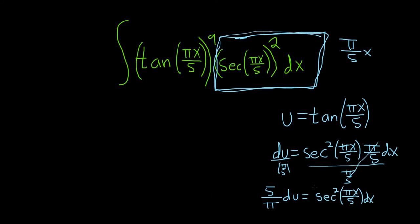So let's do it. So this secant squared of pi x over 5 is right here. And it's going to become 5 over pi du. So I'll pull out the 5 and the pi. Our tangent is u, so u to the 9th. And then we still have our du. Really cleaned up nicely.